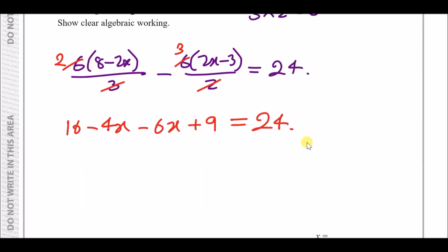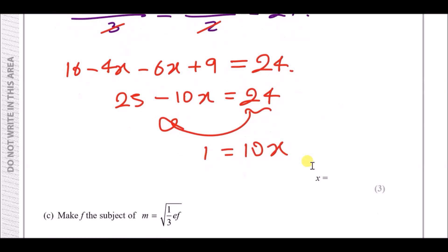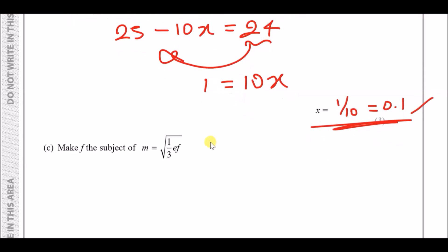Collecting like terms: 16 + 9 = 25, and −4x − 6x = −10x, giving 25 − 10x = 24. Move −10x to the right (becomes +10x) and move 24 to the left (becomes −24): 25 − 24 = 10x, so 1 = 10x, and finally x = 1/10 or 0.1.